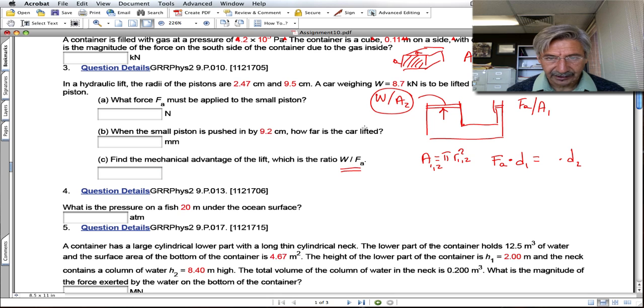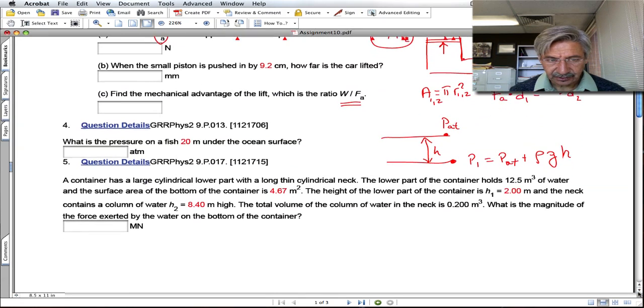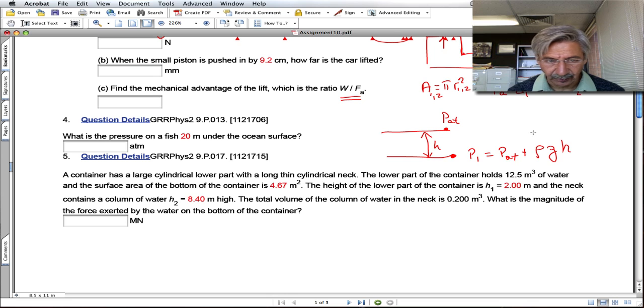For underwater pressure, the pressure P₁ is the pressure up here, which is atmospheric pressure, plus ρgh. For the density, you simply use the density of water.